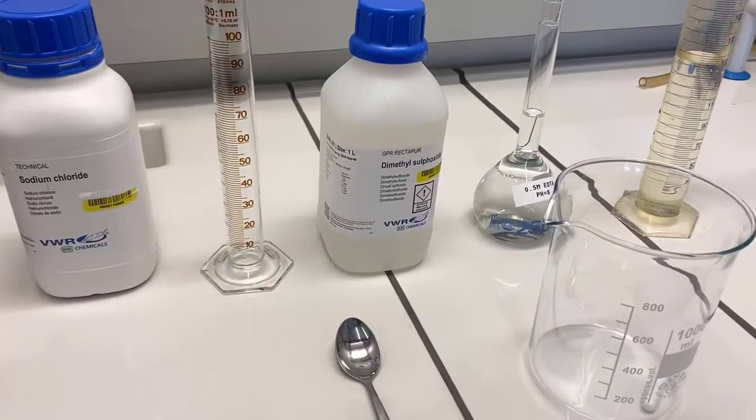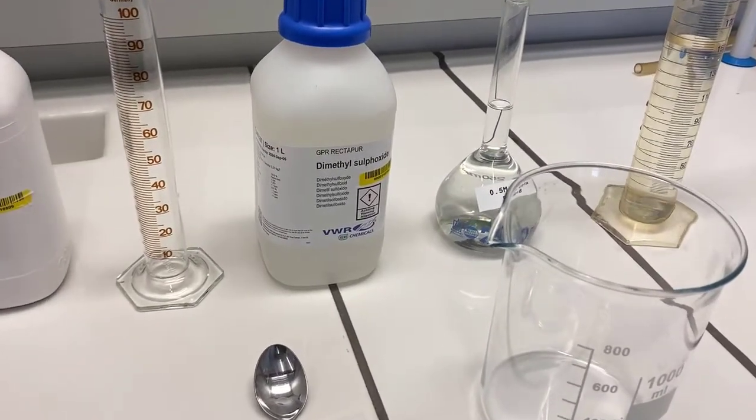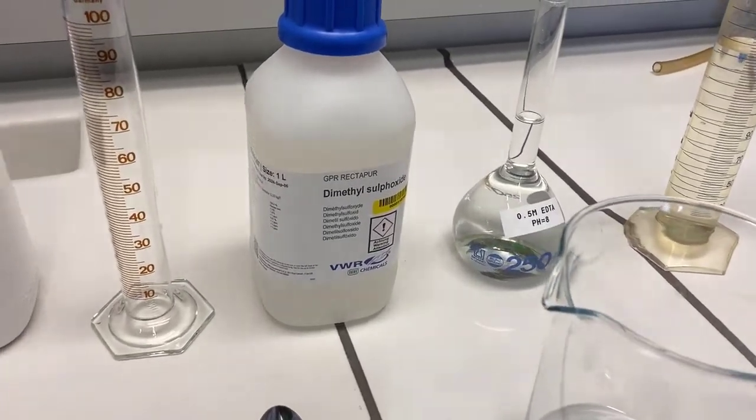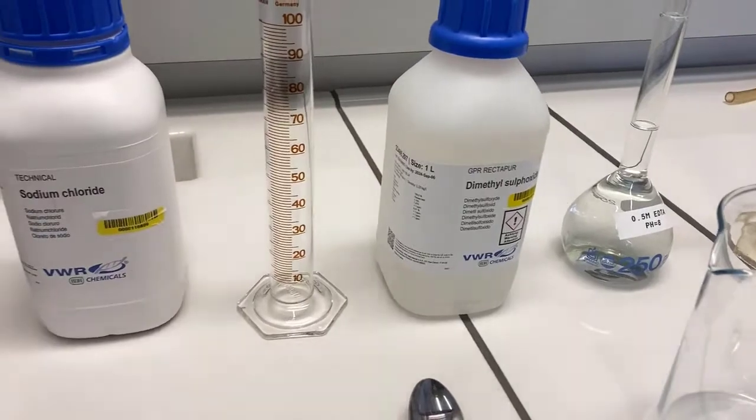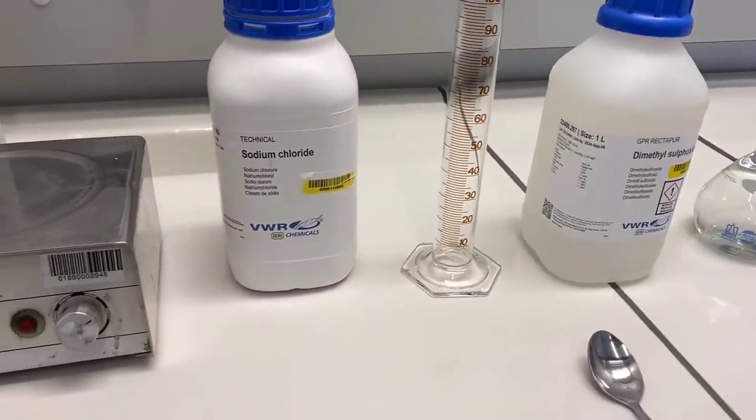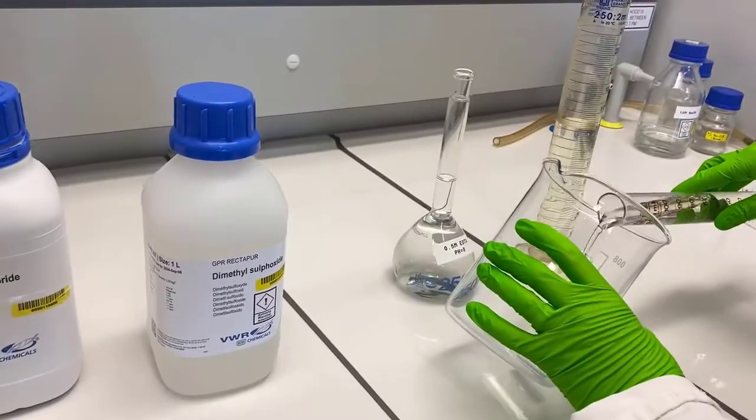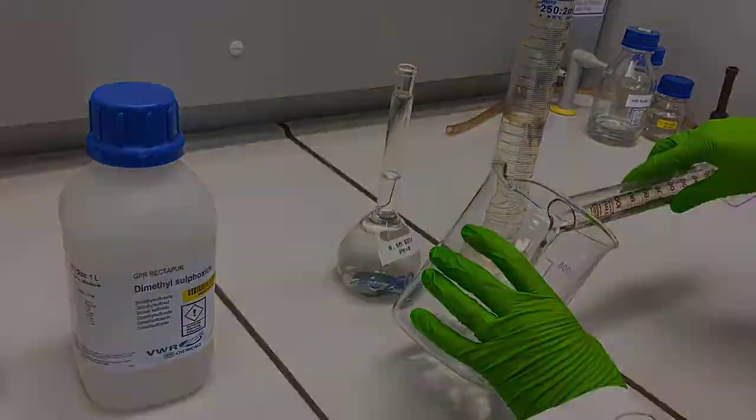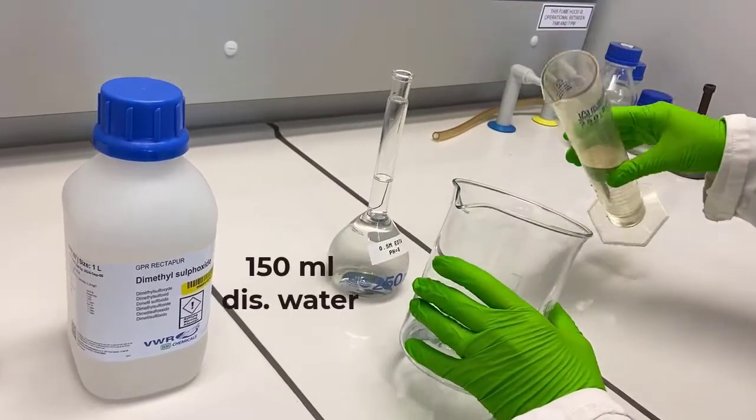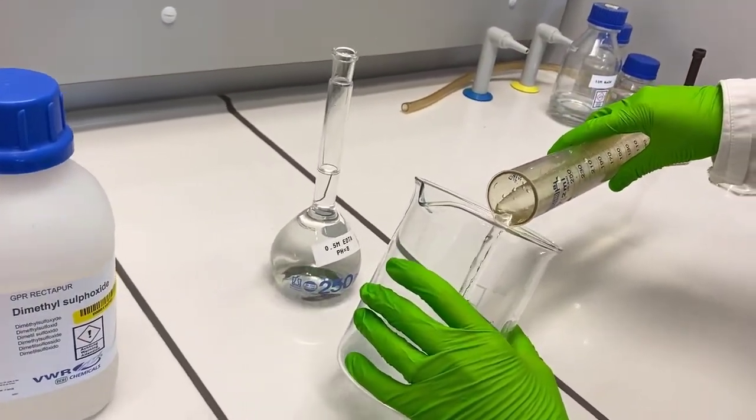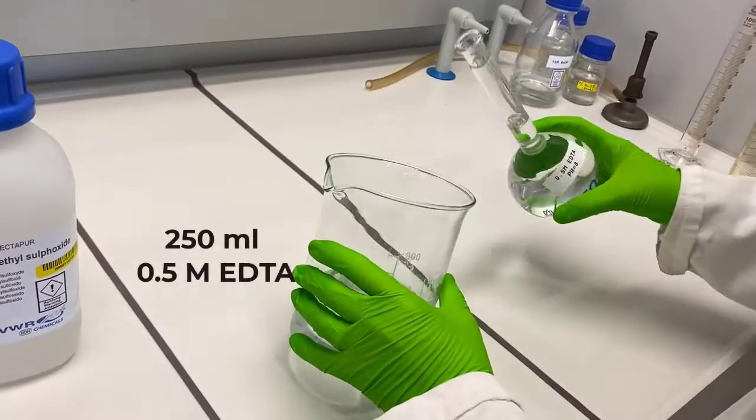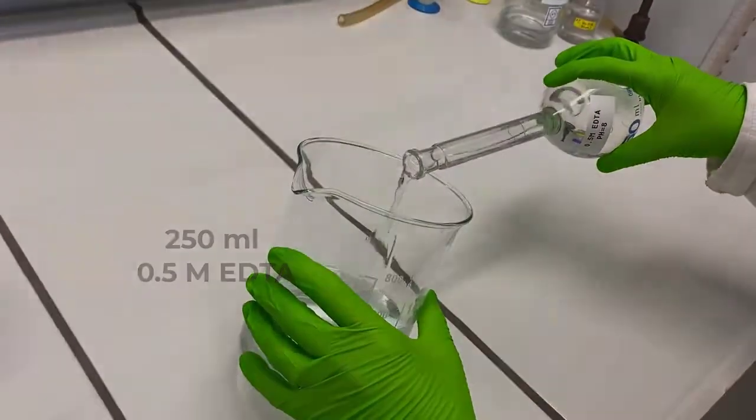The next step is a simple mixing of our 250 ml of 0.5 molar EDTA with 100 ml of dimethyl sulfoxide liquid or DMSO and 150 ml of distilled water. This will finally result in 500 ml of salt solution containing 0.25 molar EDTA and 20% DMSO at pH 8.